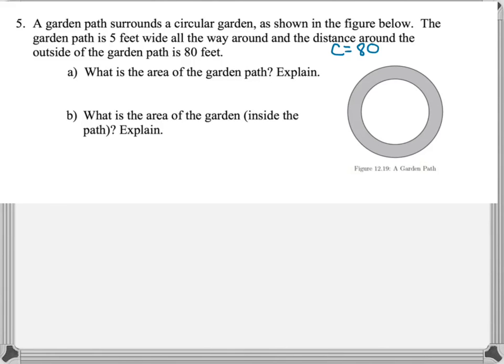So the garden path surrounds a circular garden, as shown in our figure. The garden path is 5 feet wide all the way around, and the distance around the outside of the garden path is 80 feet.